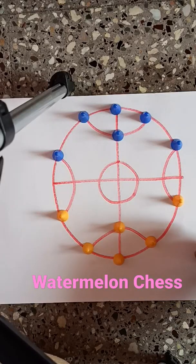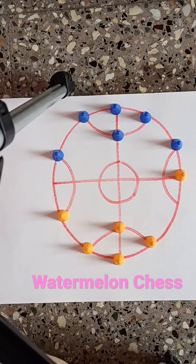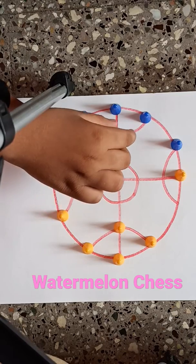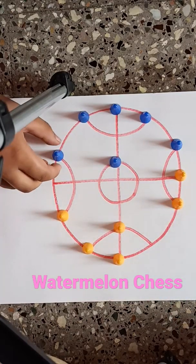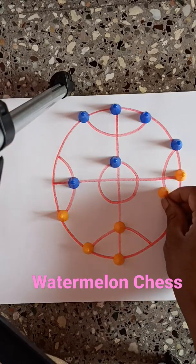This is a strategy game called Watermelon Chess. The objective is to move along the lines and trap the other member's coins. Once the coin is trapped, we can remove the coins.